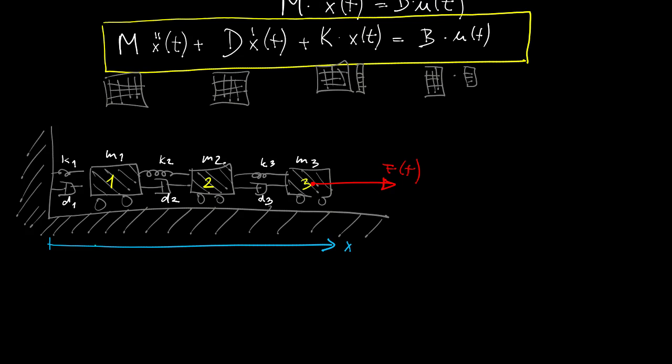Now writing the equations is as simple as applying Newton's law to the individual masses. So for the first mass, m1 times the acceleration 1 is equal to the sum of the forces. So we start with the forces on the left, where we have a force corresponding to the spring, to the damper, and similarly for the forces on the right.